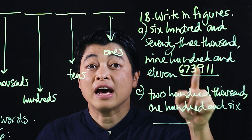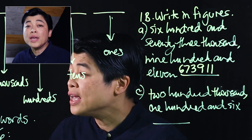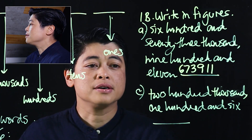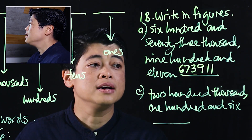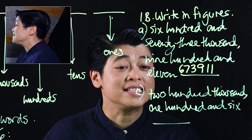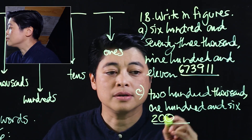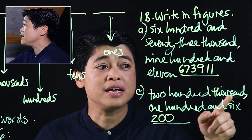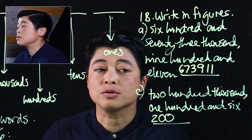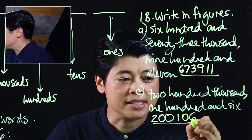The book doesn't use commas between the thousands and hundreds, so I suggest we also refrain from using commas. The next one says two hundred thousand one hundred and six. My suggestion is: as you read, when you see a comma, pause and write down. So two hundred thousand, one hundred and six gives us 200,106.